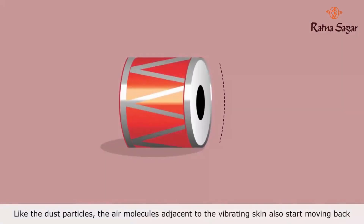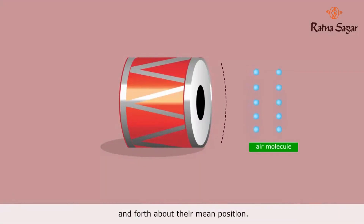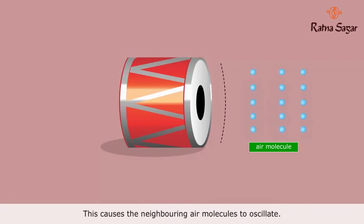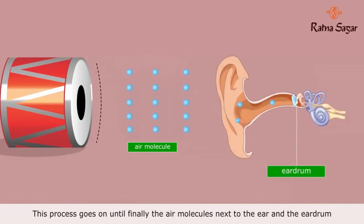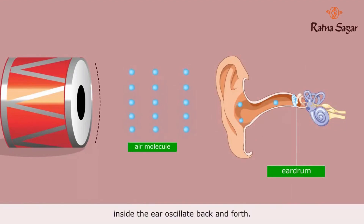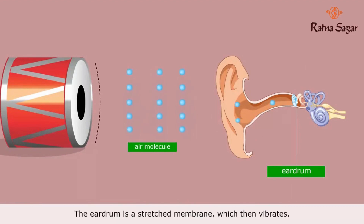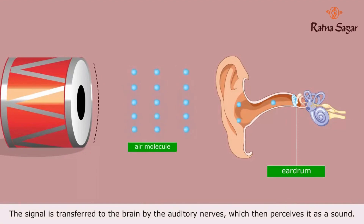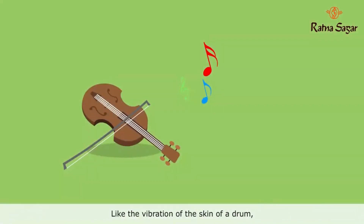Like the dust particles, the air molecules adjacent to the vibrating skin also start moving back and forth about their mean position. This causes the neighboring air molecules to oscillate. This process goes on until, finally, the air molecules next to the ear and the eardrum inside the ear oscillate back and forth. The eardrum is a stretched membrane, which then vibrates. The signal is transferred to the brain by the auditory nerves, which then perceives it as a sound.